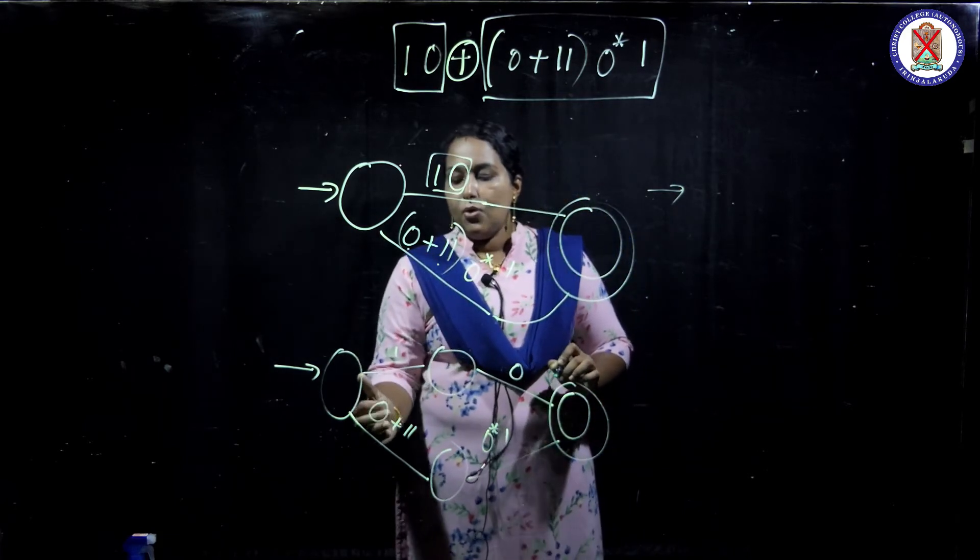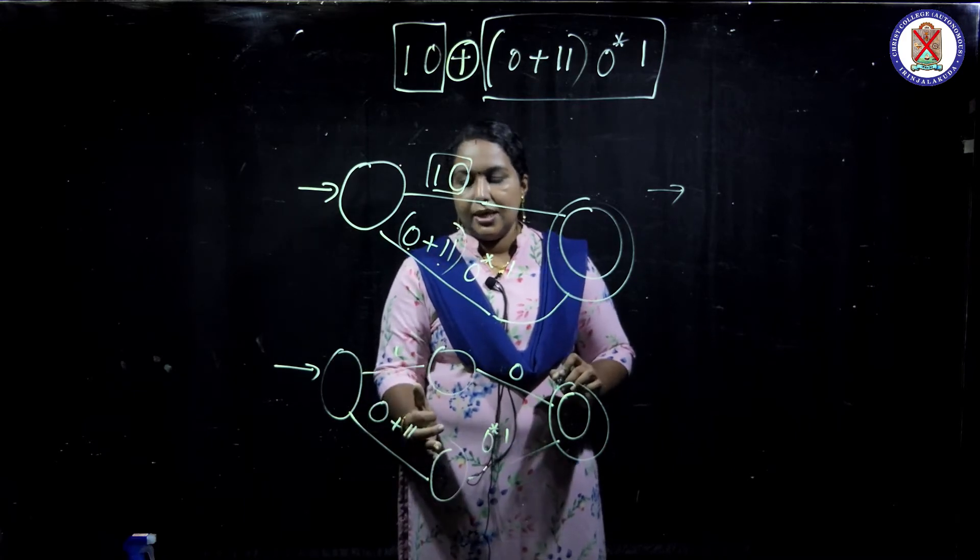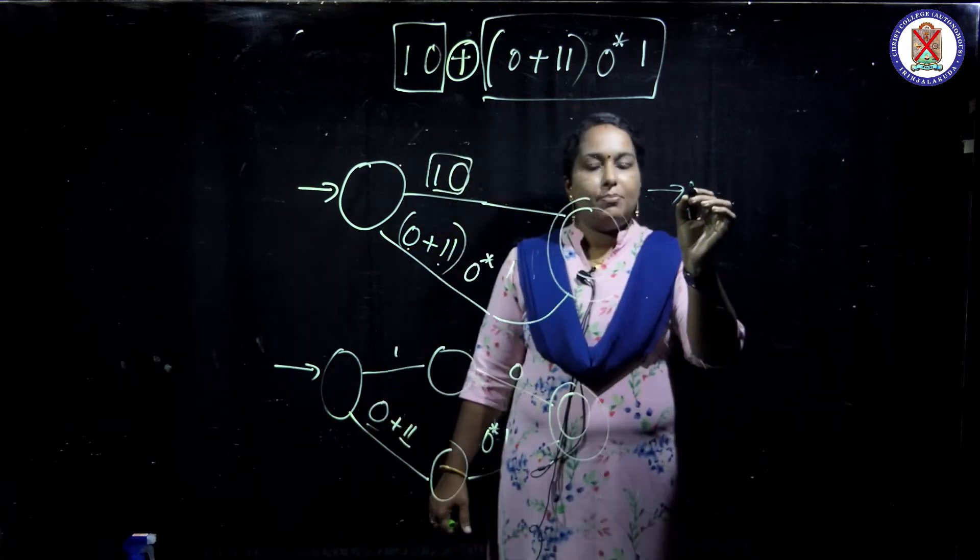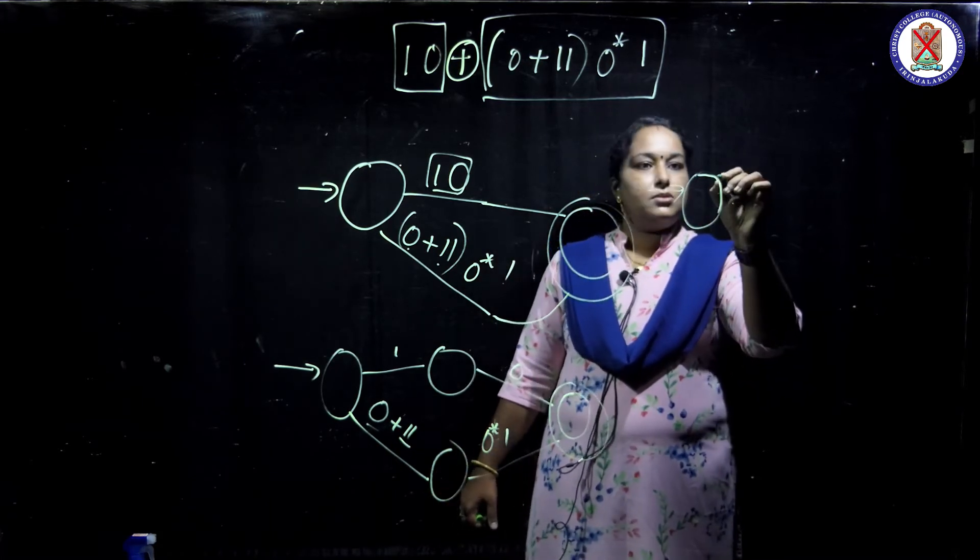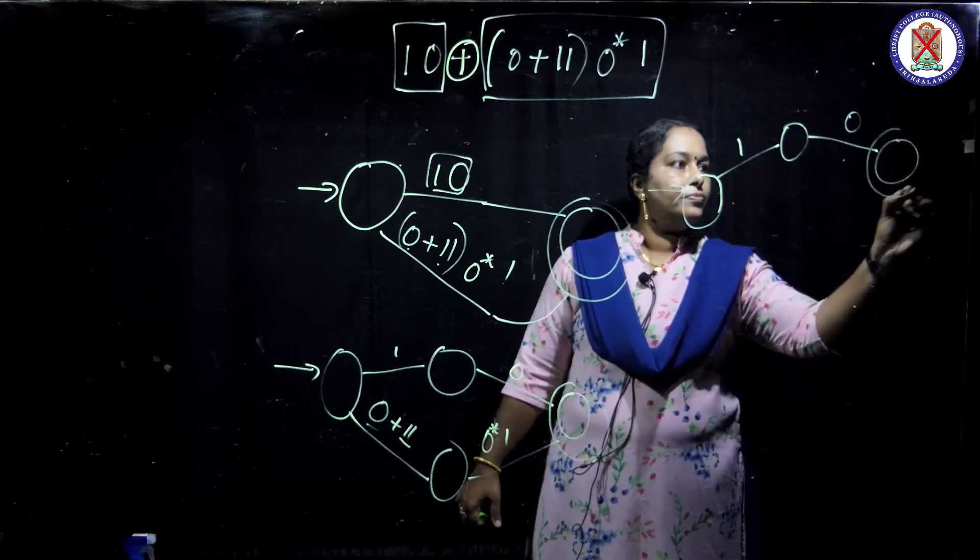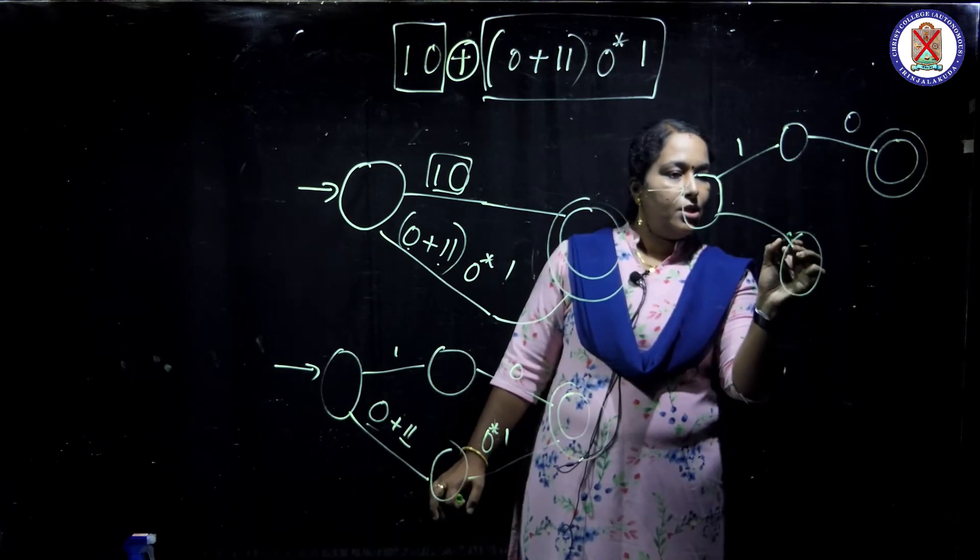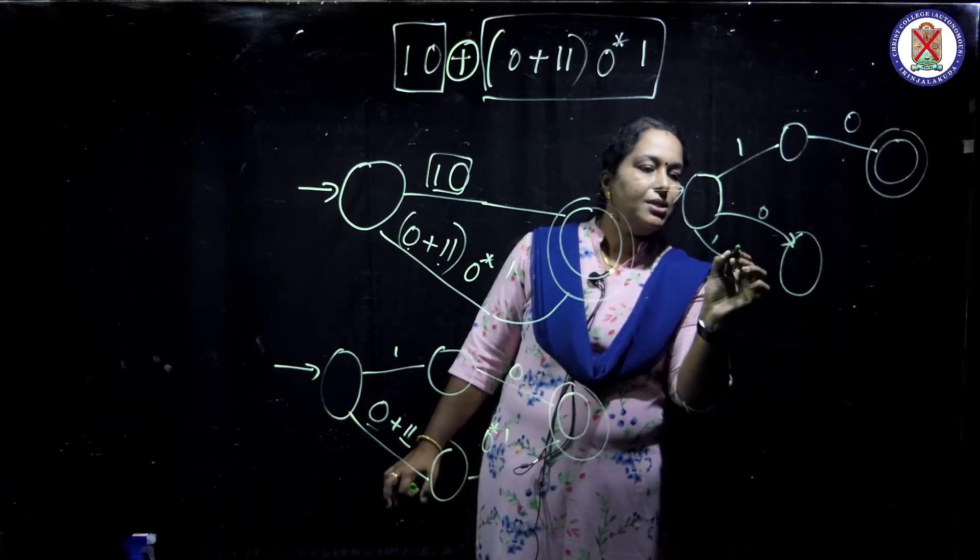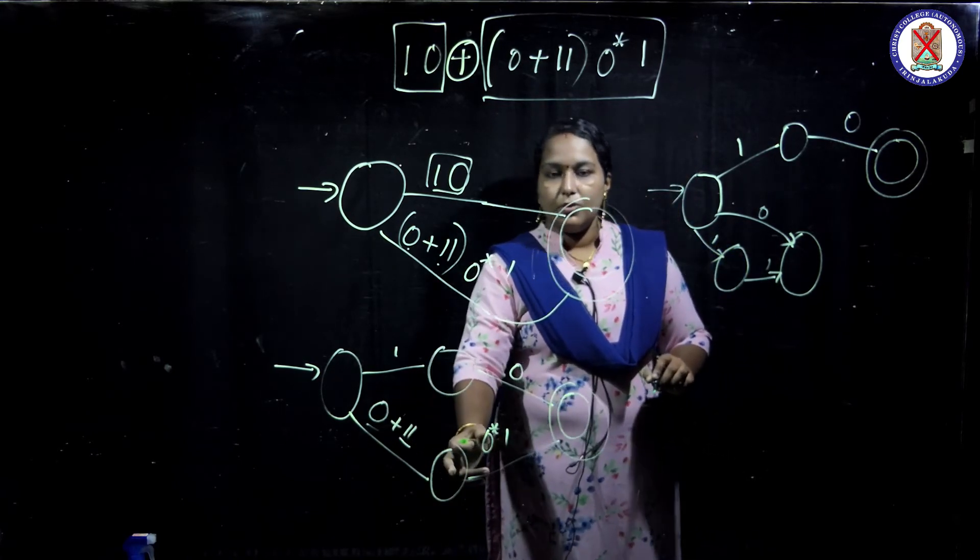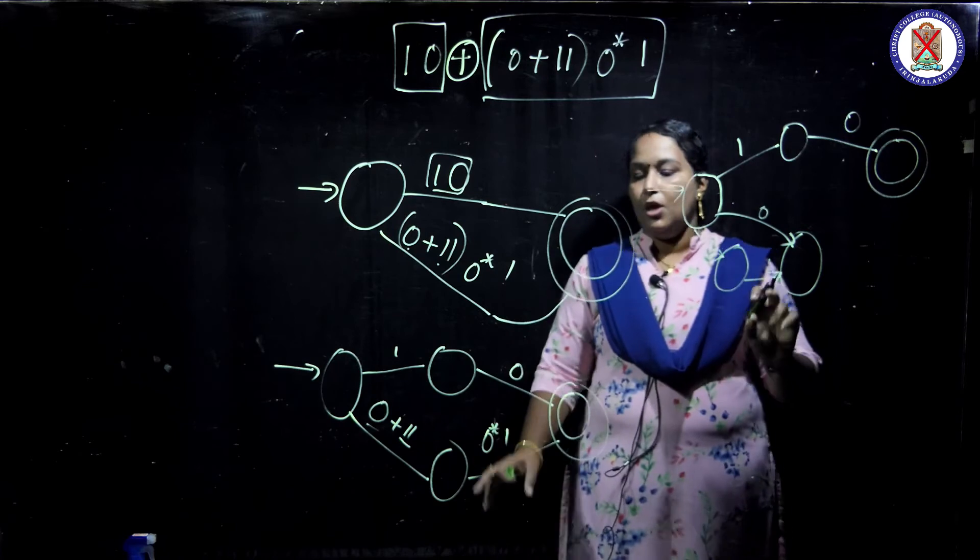This DFA, look at here. Zero plus one. Plus means or, with zero I can give to this state. Plus or with one, I can move to this state. I am modifying it. Here, zero. With zero I can move to this state or I can move with one to reach the state.